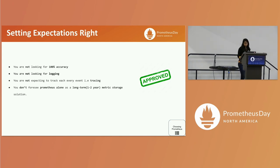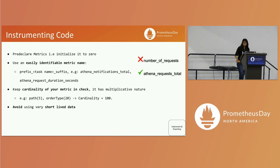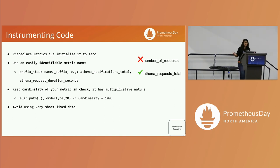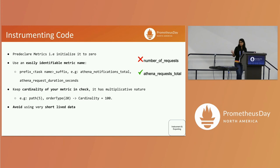Once we have our expectations right, our next step would be to instrument our code with Prometheus. One of the mistakes we made while starting off was not naming our metrics right. It's a very simple mistake but it can cost a lot. We register our metrics once but we will be using them way more often, and it's not just you — the entire team will be using them. Having an unclear metric name can create a lot of issues.